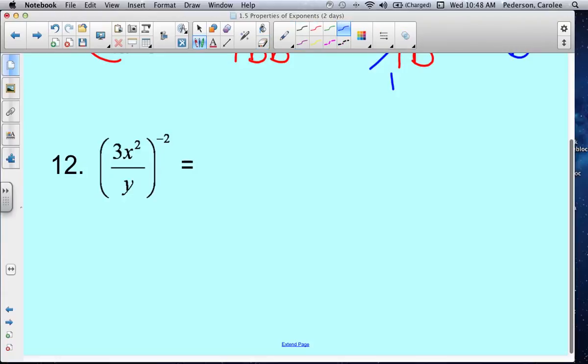So the rule is if you have a negative exponent, you can flip it. So this y now becomes the numerator. The 3x squared now comes the denominator. And now you have a positive 2 power that now you can distribute.